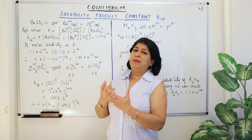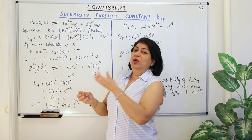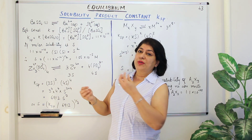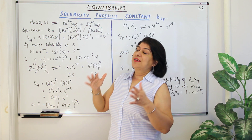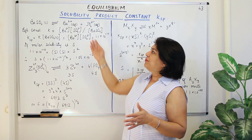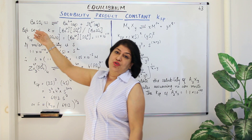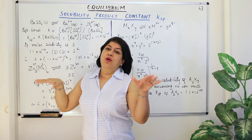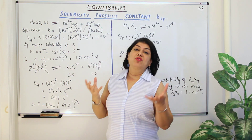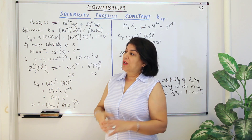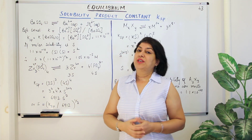We've studied the dynamic nature of equilibrium — how the number of molecules entering the solution in the form of ions, that is which are getting dissociated, is equal to the number of ions which are getting associated again to give back the salt. Therefore the concentration of both the barium sulphate solid and the ions becomes constant at equilibrium.